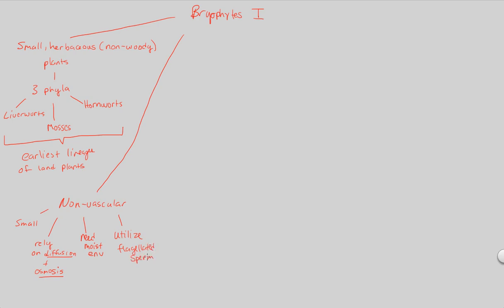These non-vascular plants must utilize flagellated sperm for reproduction. Flagellated means motile, but that motility is useless without some medium for it to function in — meaning flagellated sperm need water to move. This is what we mean by the transition to land: you don't immediately become tall trees the moment you're a charophyte turned plant. Evolution is a slow progression towards more success and more capable plants.